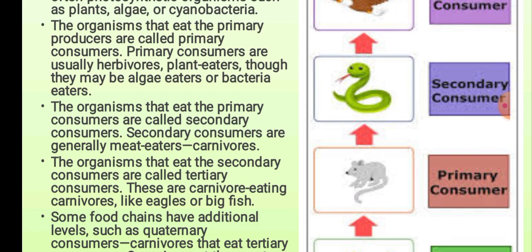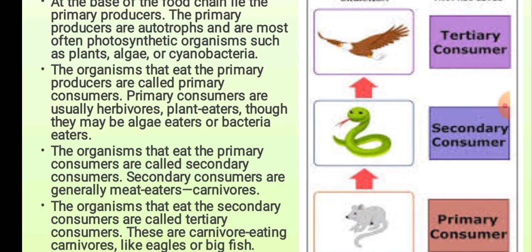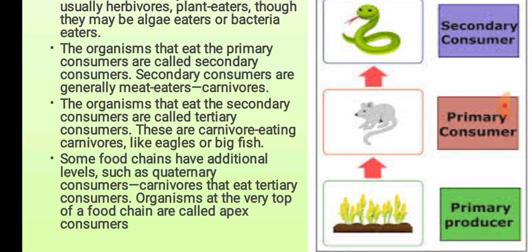The organisms that eat the secondary consumers are called tertiary consumers. These are carnivores eating carnivores, like eagles or big fish. Some food chains have additional levels such as quaternary consumers — carnivores that eat tertiary consumers. Organisms at the very top of a food chain are called apex consumers.